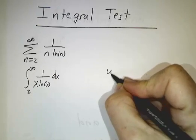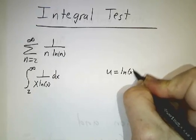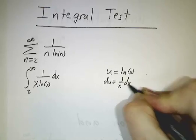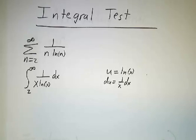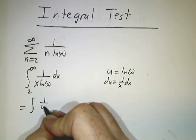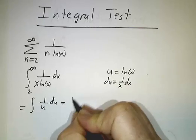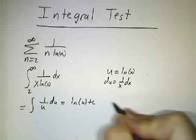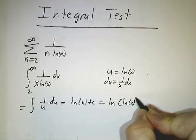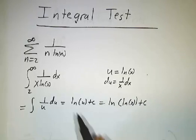You do the u substitution, u equals natural log of x. Du is 1 over x dx. And you get that this is the integral of 1 over u du, which is natural log of u plus constant, which is natural log of natural log of x plus constant. And that diverges.